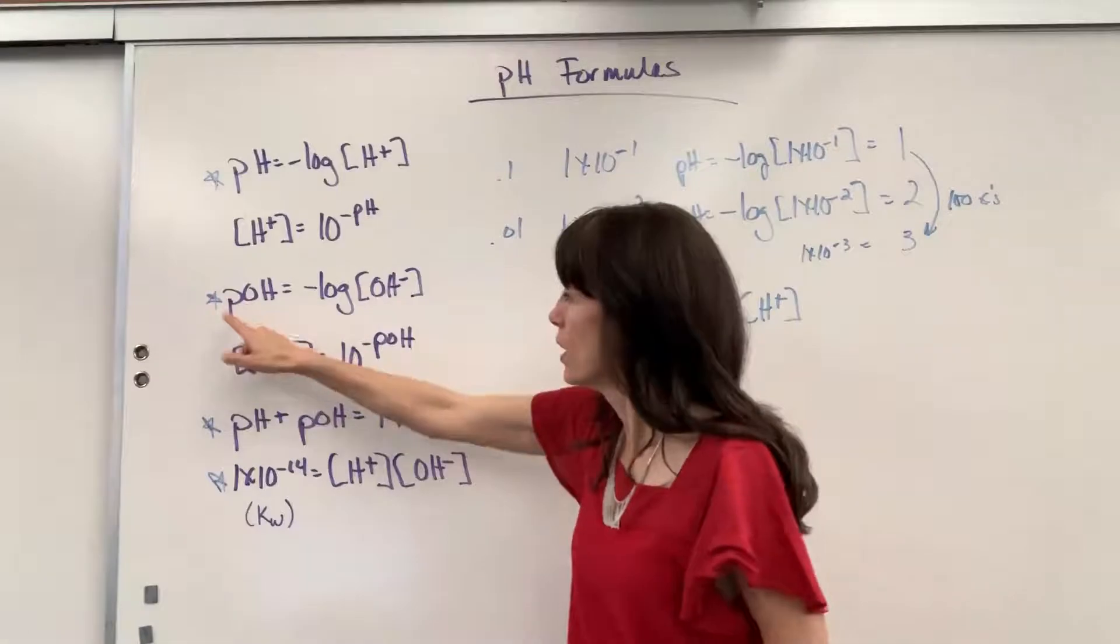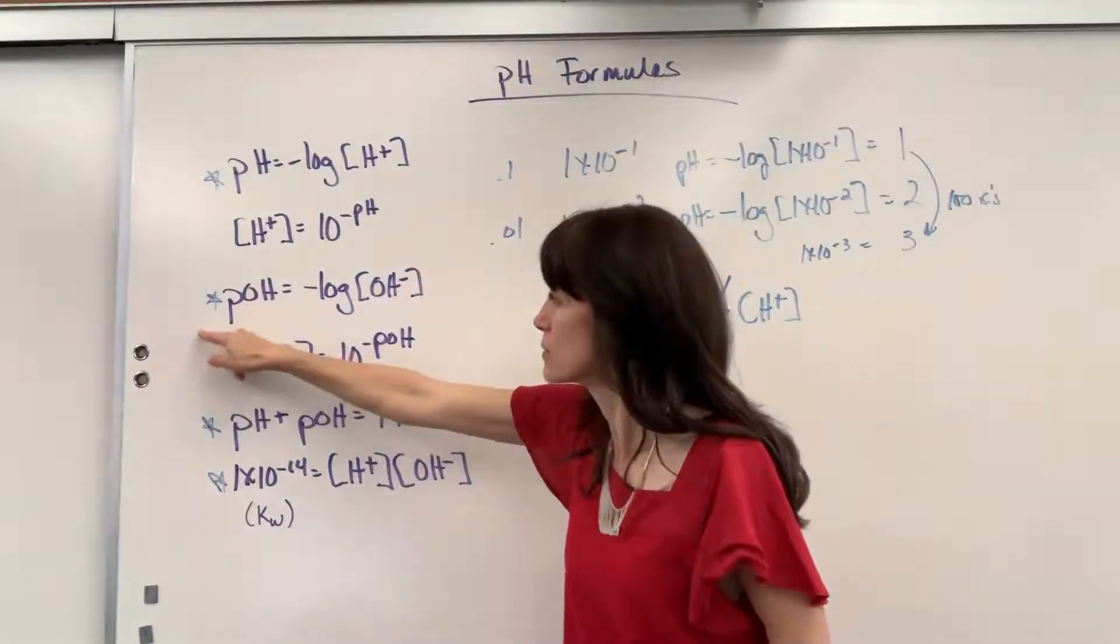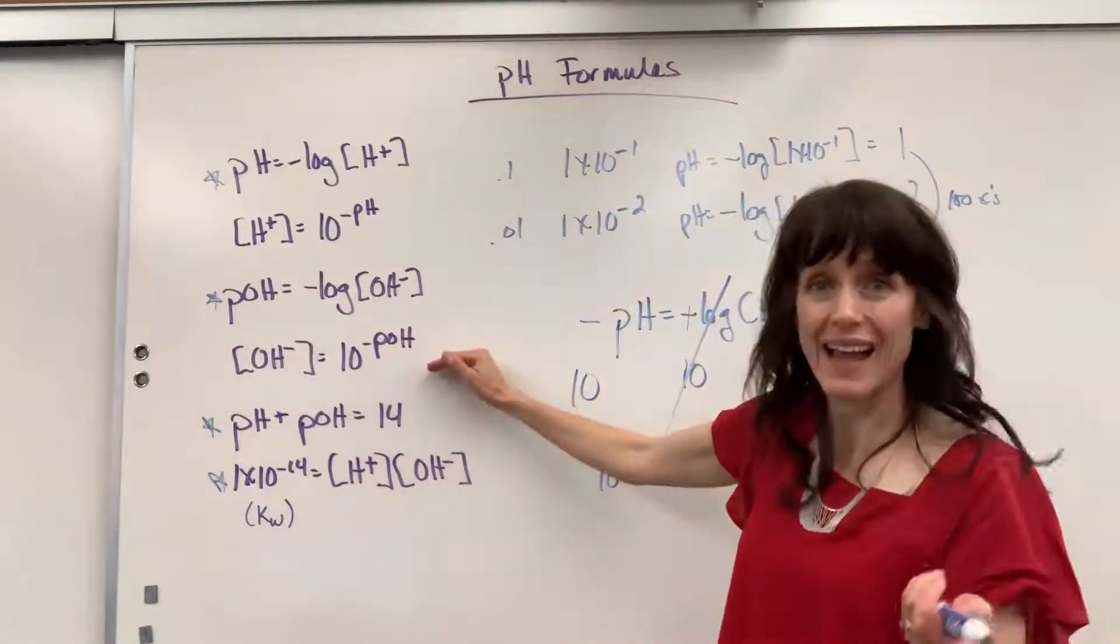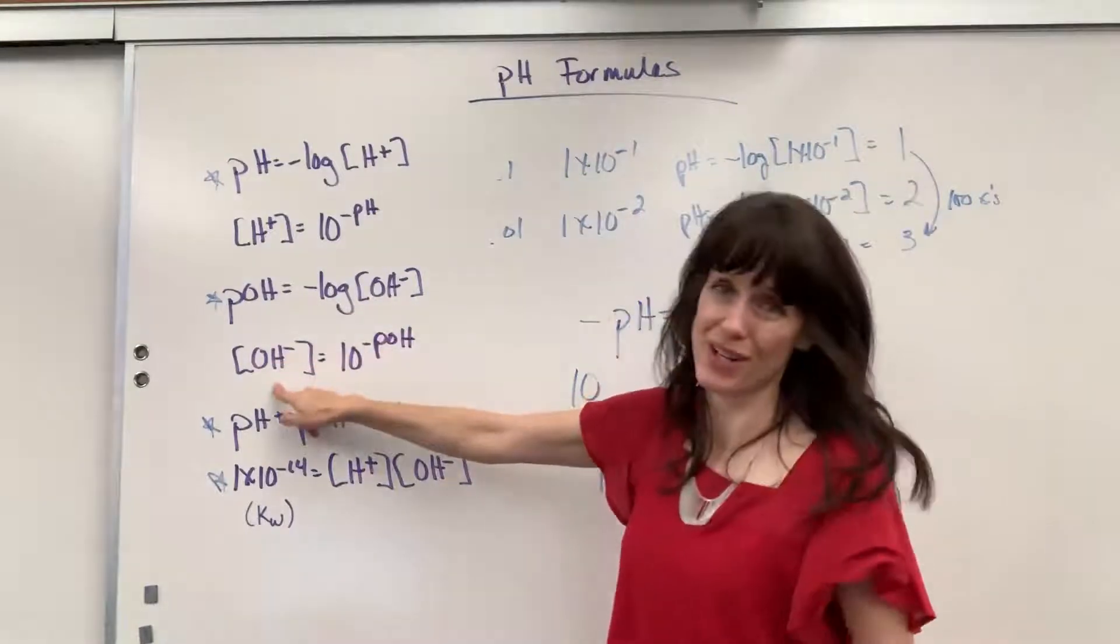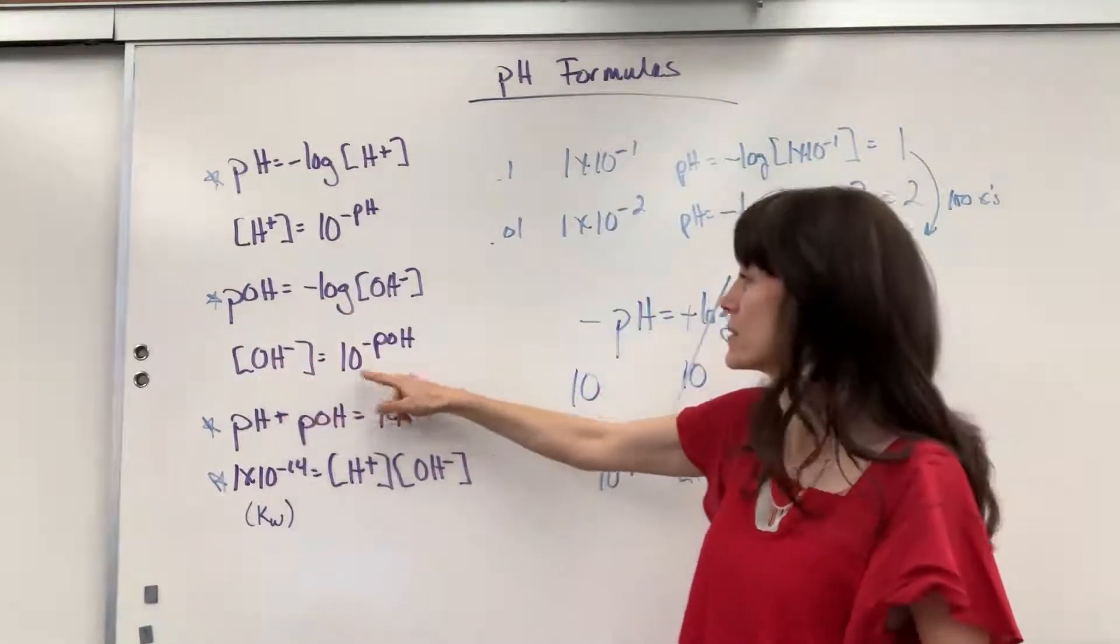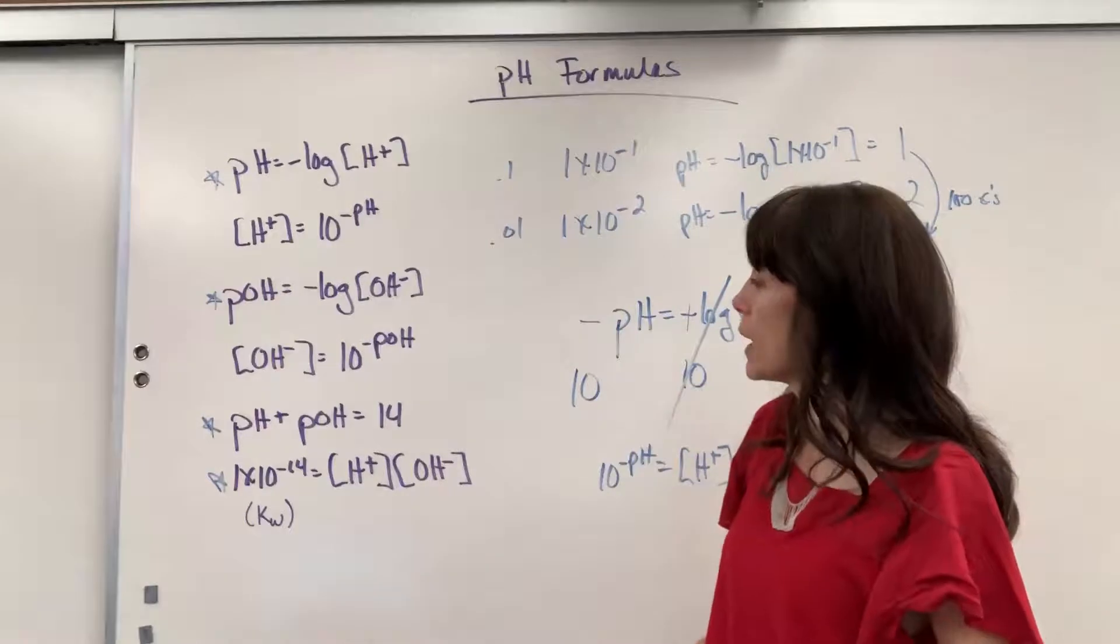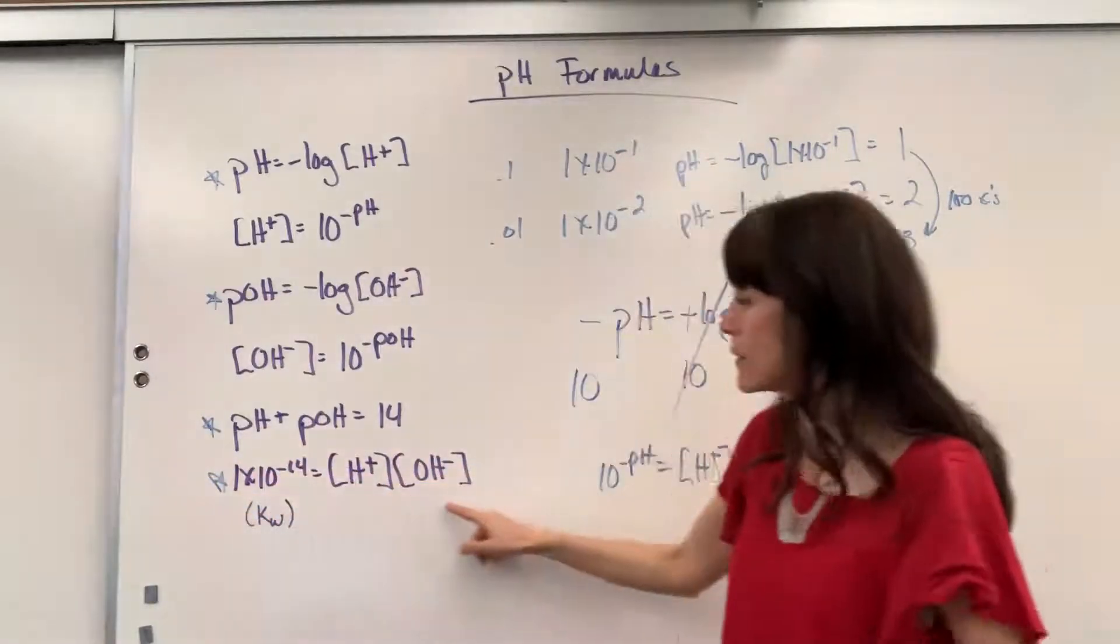If you take the base 10, raise both of these to base 10, here is, using the anti-log, the concentration of hydroxide equals 10 to the negative POH. And then right here, let's actually skip down here. So, here's our KW.